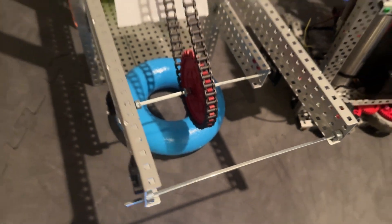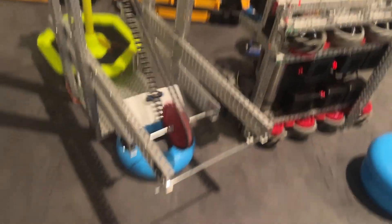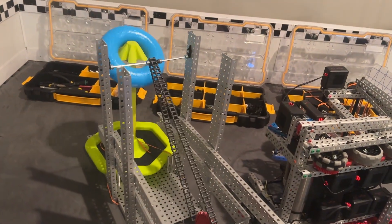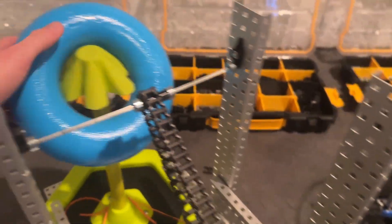So essentially this is the hook, pretty basic stuff. Oops, that's the wrong way. Just kind of scored onto the goal. Pretty basic. Some of the rubber bands snapped on the goal so it's not held in quite as nicely as it was before.